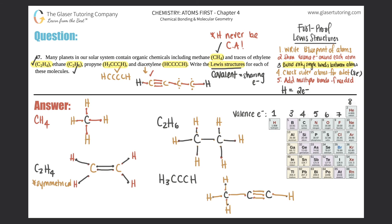Continuing across the molecule: this carbon already has two, four, six, eight — it's good. The next carbon has two, four, five, six — needs help. So I throw those electrons into the bonding region to form another triple bond. That carbon now has eight electrons, and the final carbon also has two, four, six, eight electrons. Diacetylene is complete, with two triple bonds flanked by single bonds to each terminal hydrogen.